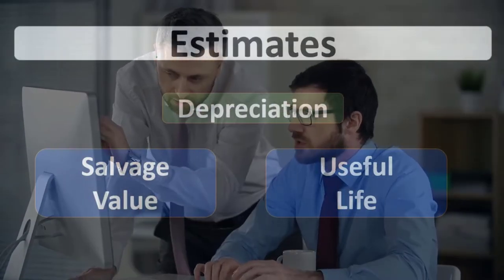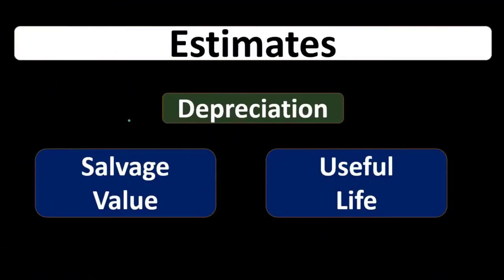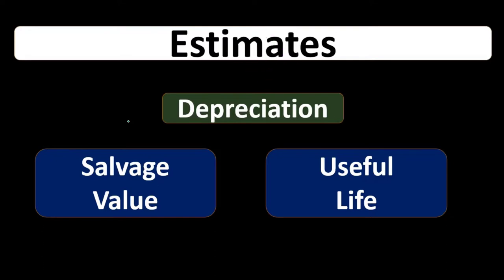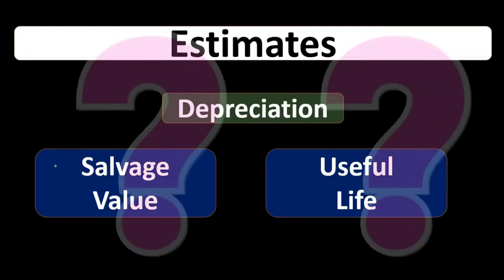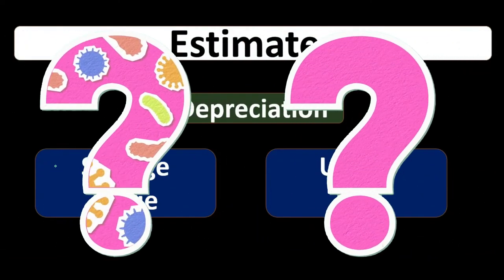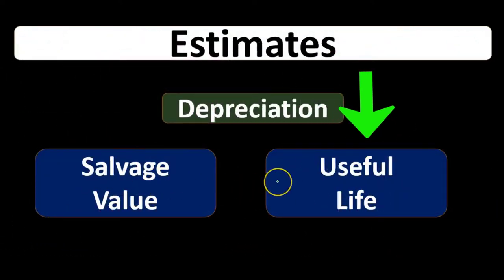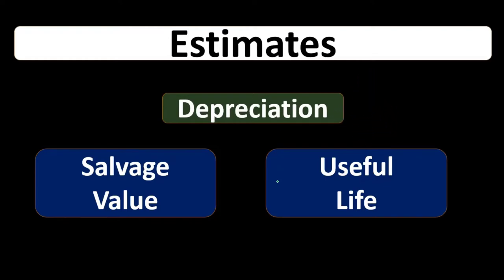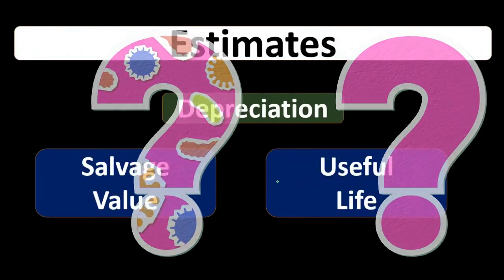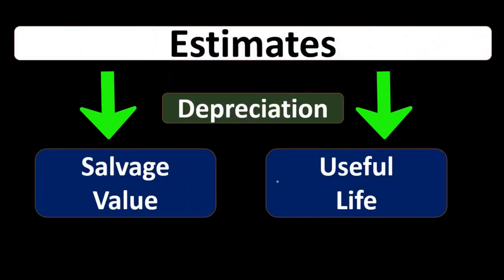There are a couple of areas where the estimate could clearly change. When we have depreciation, the cost is the cost — we bought it for what we bought it for, and that's not generally an estimate. What is an estimate is, one, the salvage value — how much we think it's going to be worth at the end of its useful life, how much we can scrap it for. And two, the useful life itself — how long we think it's going to last and how long we'll be using it in operations. Those are the two things that could change.